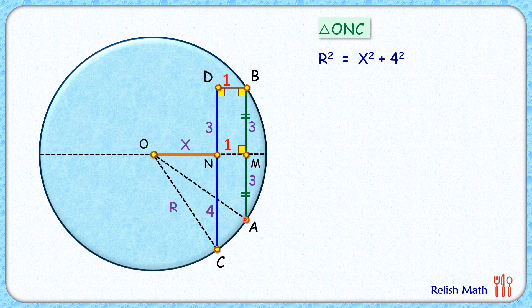OA is also the radius of the circle. In triangle OMA, angle M is 90 degrees, so it's a right angle triangle. Applying Pythagoras theorem, we get the hypotenuse squared, which is R² = (X + 1)² + 3².